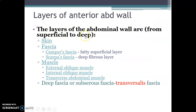The anterior abdominal wall has layers arranged from superficial to deep that you need to know in order: skin, followed by fascia, then muscle, then deep fascia.